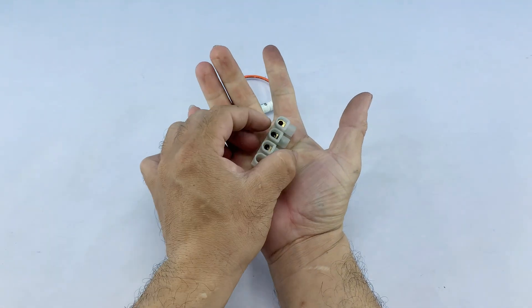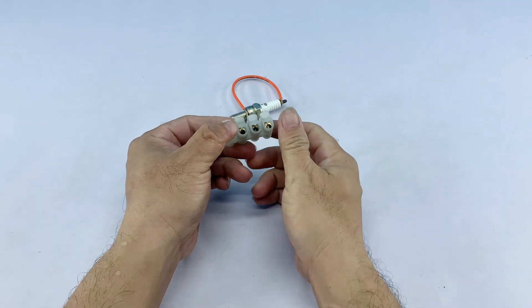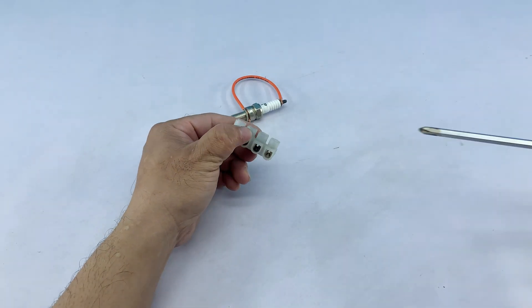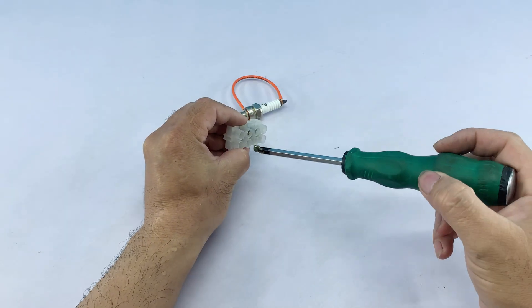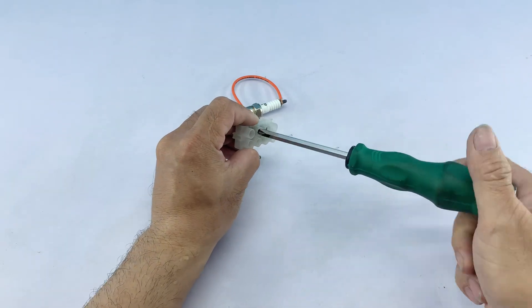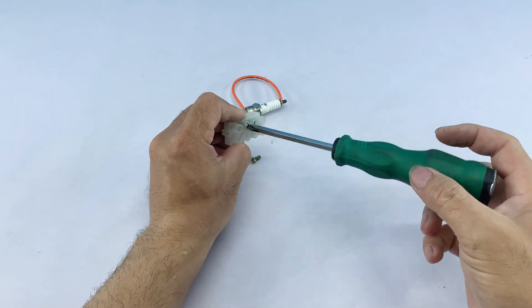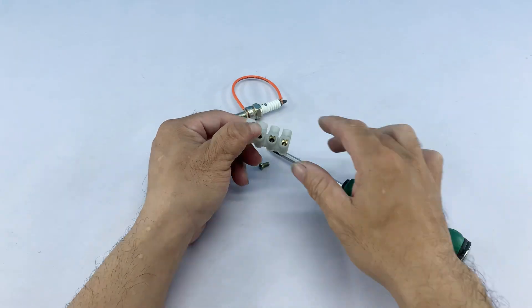Here I have a small terminal block. I'm using a screwdriver to disassemble it and remove the internal metal connector. This tiny piece is perfect for creating a stable point for our soldering tip.